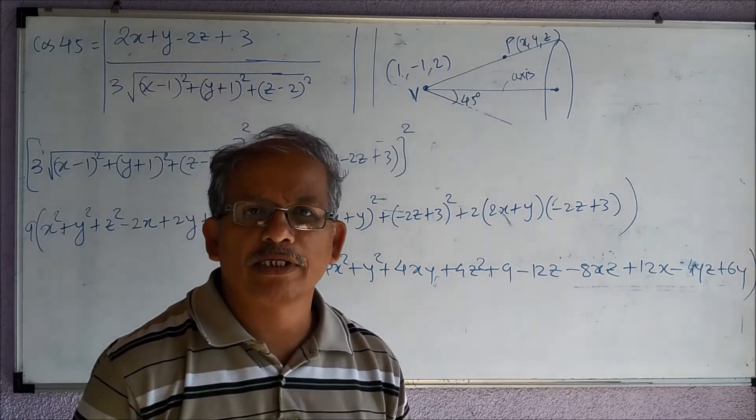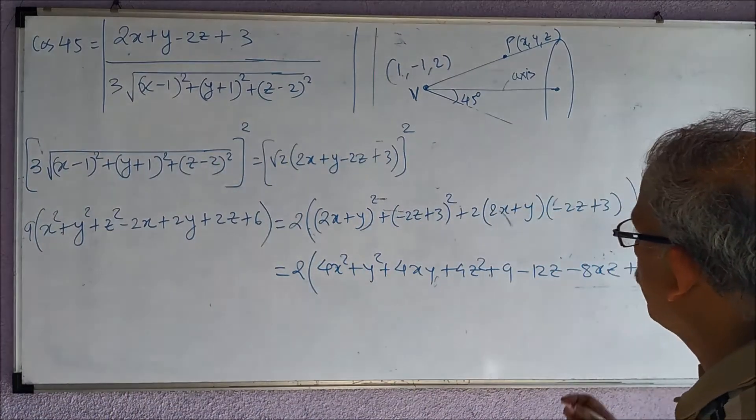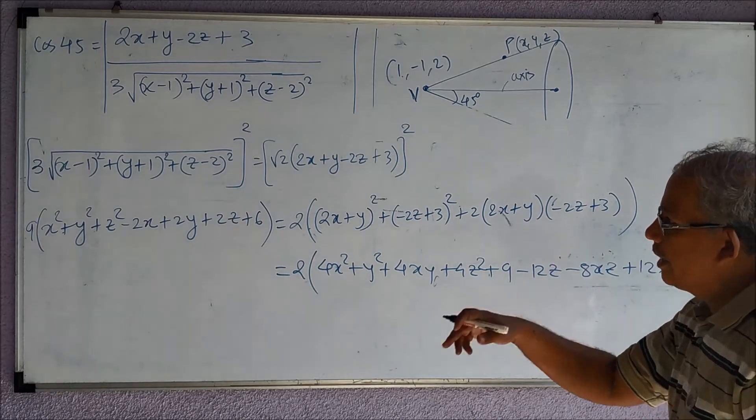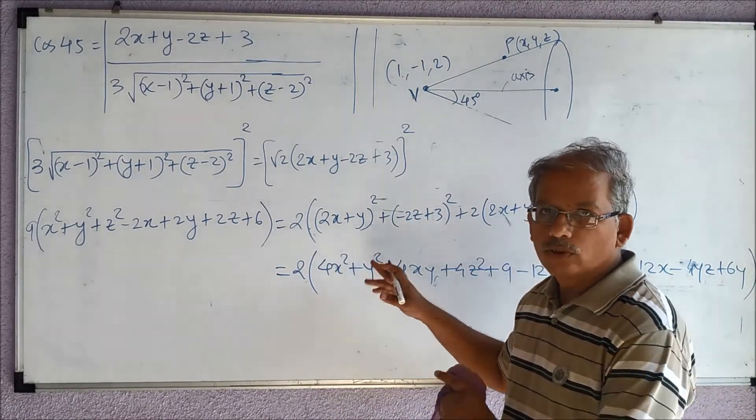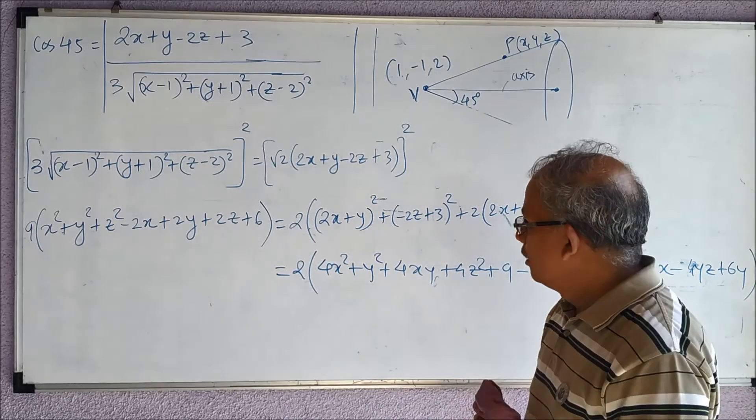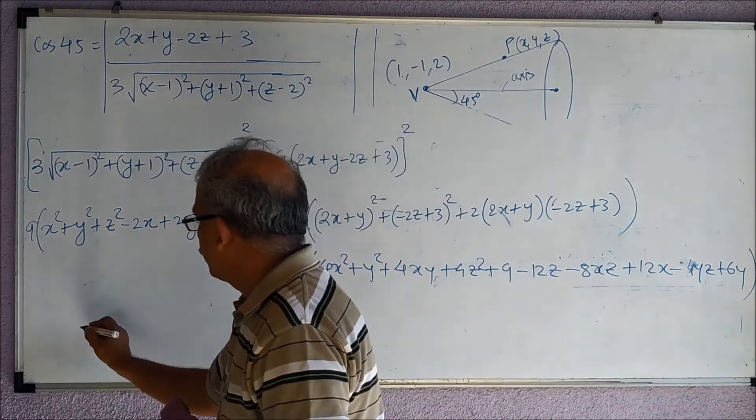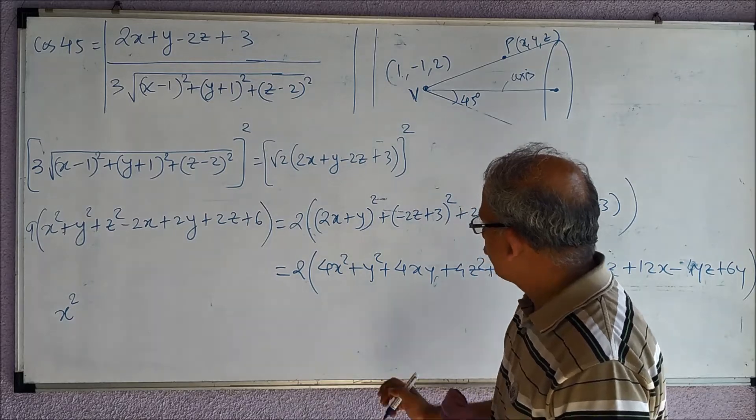Now you can see that this is 9x² over here and this is 8x² on the right. So if I take that to one side, it will be just x². 9y² and this is 2y² on the right, so there is no more y², so plus 7y².